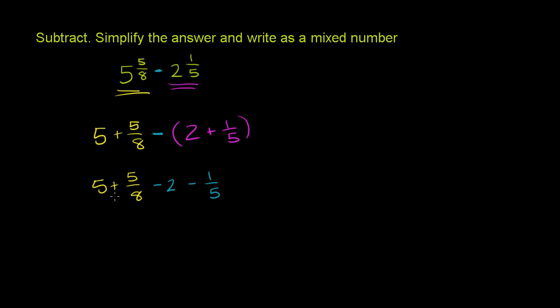And now we can rearrange it. We can say this is the same thing as, let me do it in orange, as 5 minus 2. 5 minus 2. That's the whole number parts.